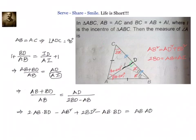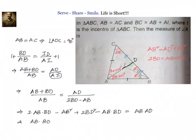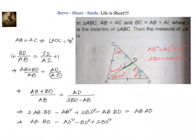Simplifying: we have 2AB·BD and AB·BD, so subtracting gives AB·BD minus AB squared plus 2BD squared. Now AB squared can be written as AD squared plus BD squared by Pythagoras theorem. So it becomes AB·BD minus AD squared minus BD squared plus 2BD squared, which gives AB·BD minus AB·AD equals 0.